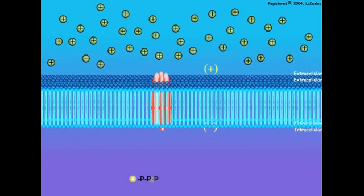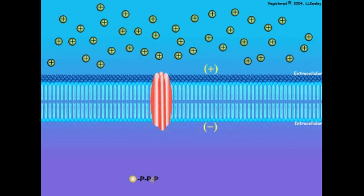The previous scene demonstrated how second messengers transfer the primary message from the hormone to activate an enzyme that will produce a physiological response in the target cell.